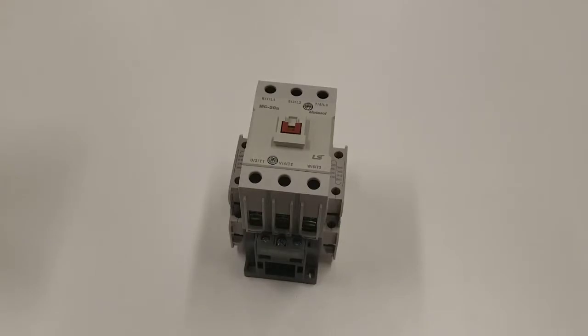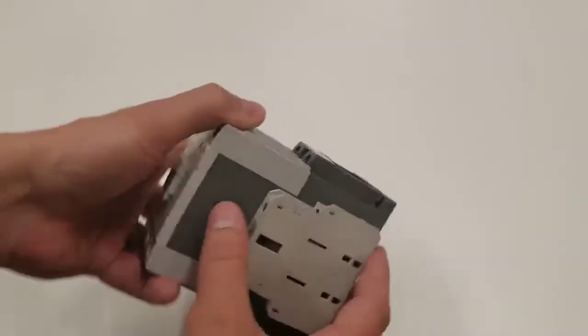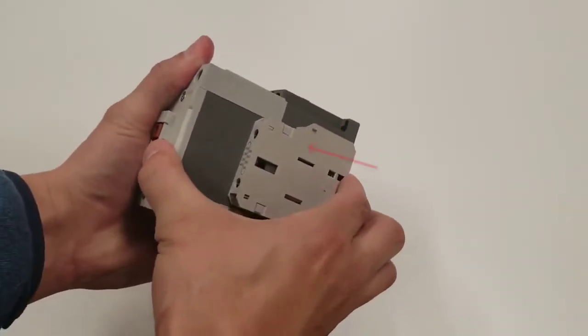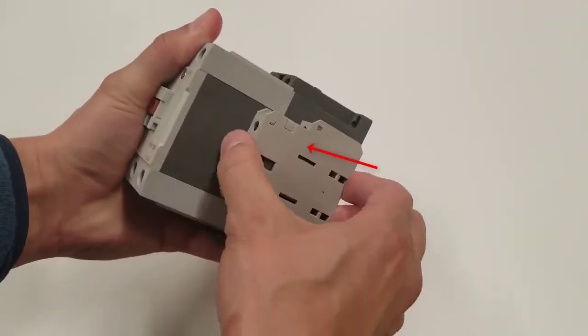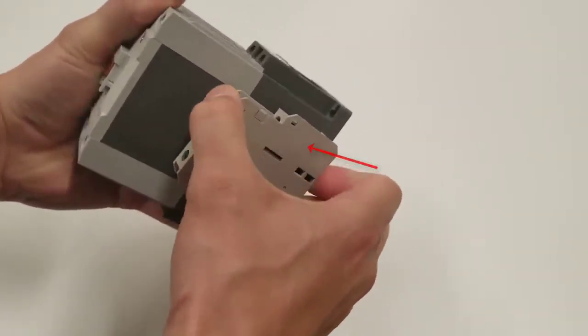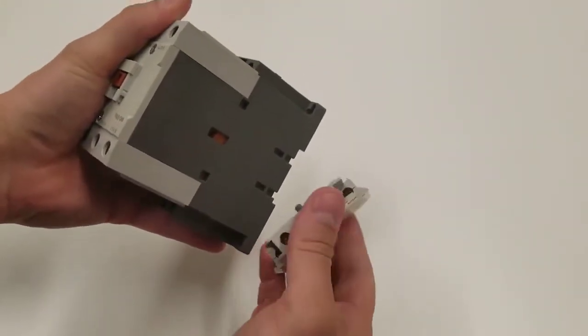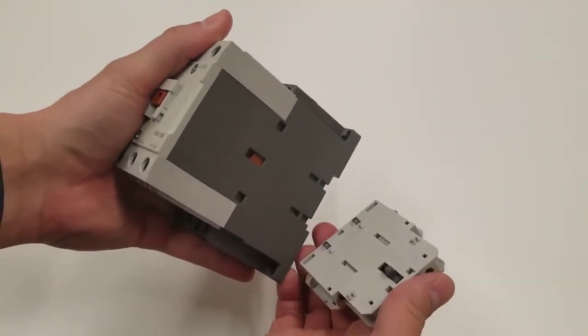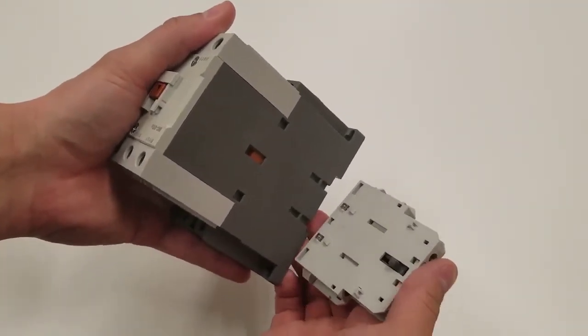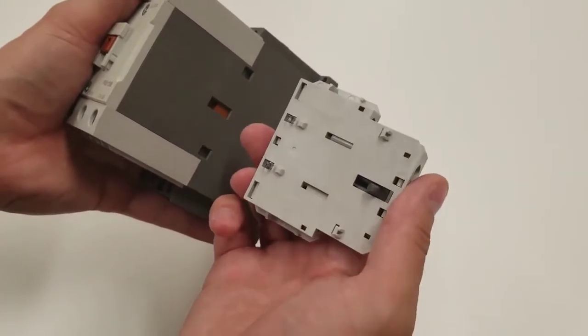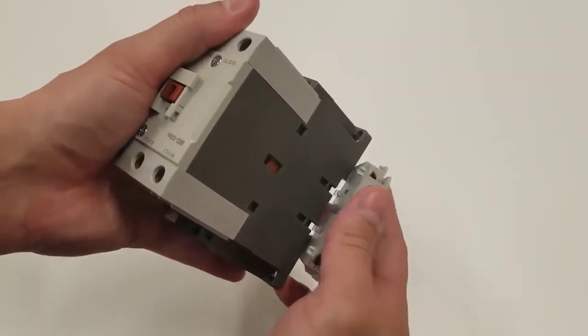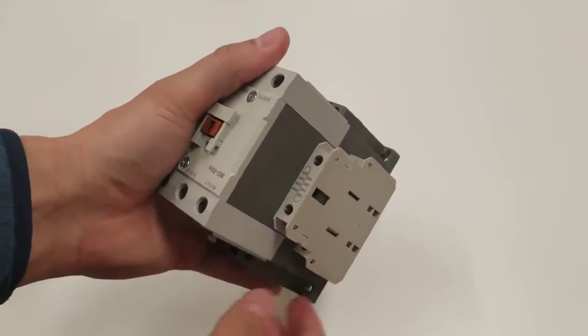And if you want to remove the auxiliary, if you don't need them, all you do is push up from the bottom and then pop out the top. Now you have to put a little bit of pressure on it. So I'm just going to reapply it. There's little legs that go into the bottom, and then it just snaps right back in.